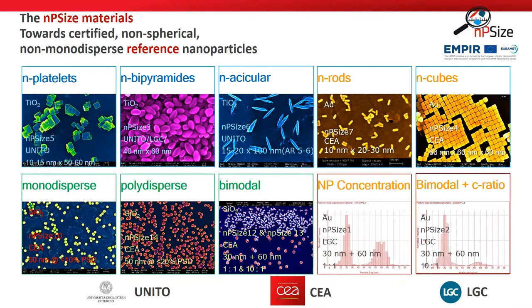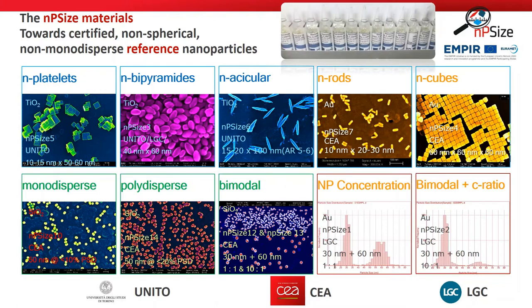Here you have a more detailed view of all the materials we produced during the project. Titania particles were produced by the University of Torino in Italy. Gold bimodal particles were produced by LGC in the United Kingdom, and others — gold cubes, gold rods, and silica particles — were produced by CEA.